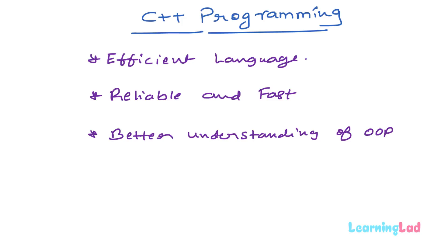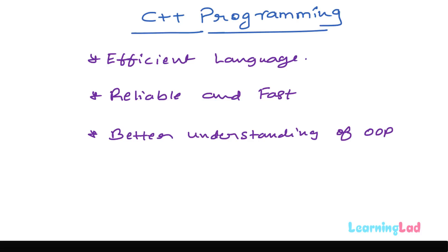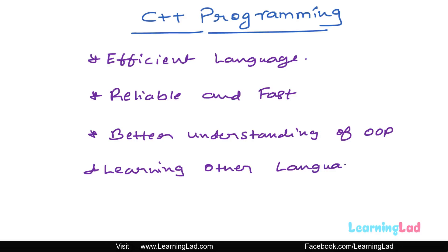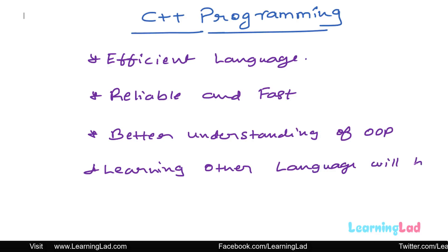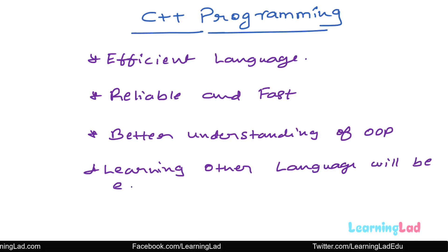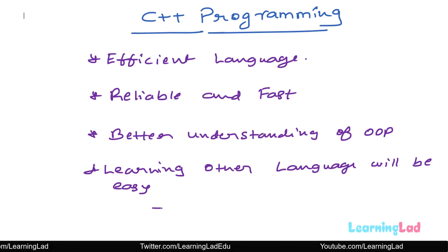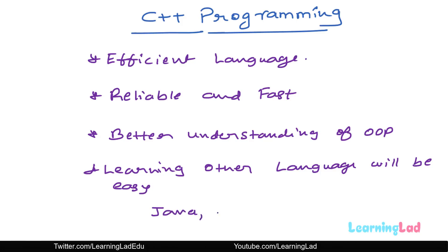You will be learning concepts like classes, objects, inheritance, and polymorphism. C++ is one of the best languages to learn the object oriented programming approach. Once you learn C++, if you want to move to other languages like Java or C#, it will be a lot easier, because Java and C# also use the object oriented programming approach, so you will find it easy to learn those languages.